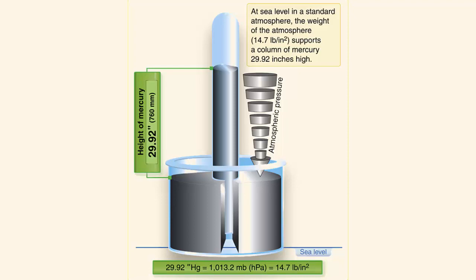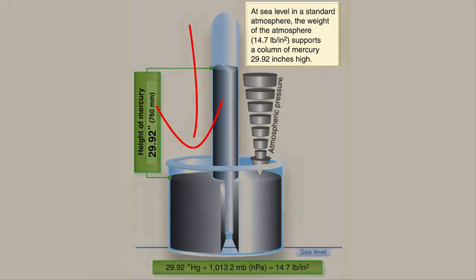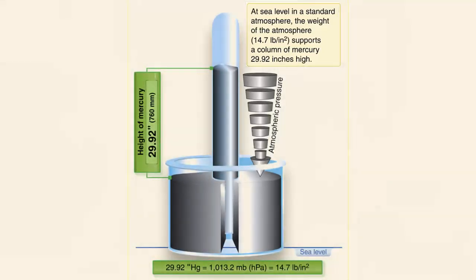Under standard conditions at sea level, the average pressure exerted by the weight of the atmosphere is approximately 14.70 pounds per square inch, or 1013.2 millibars.